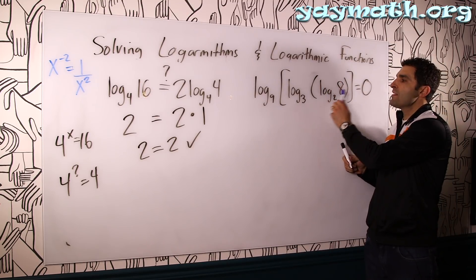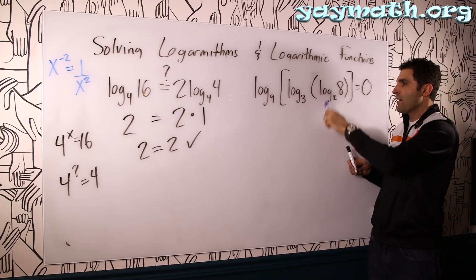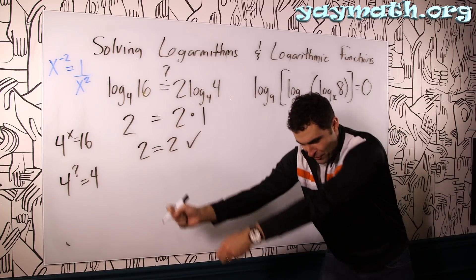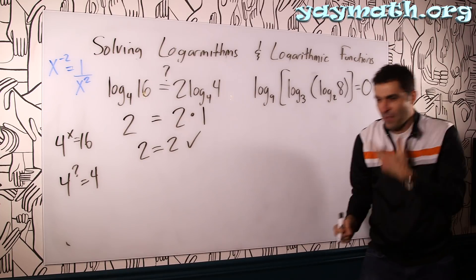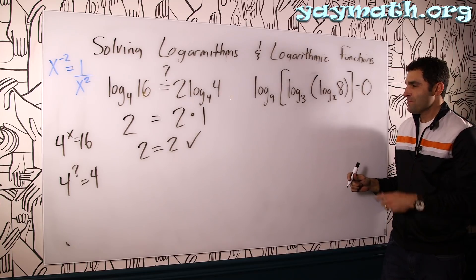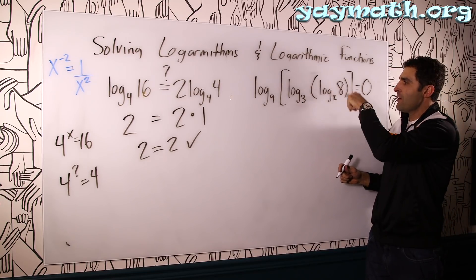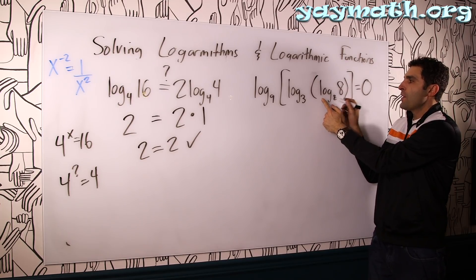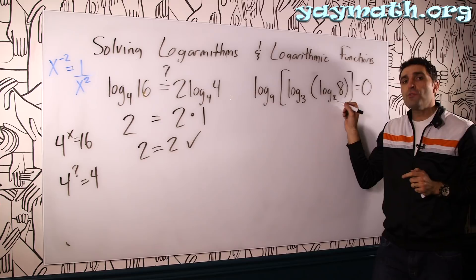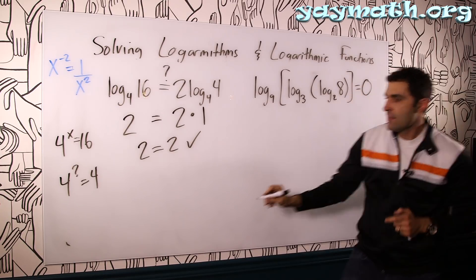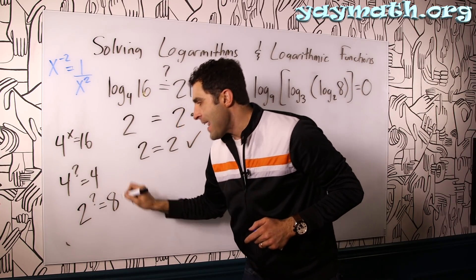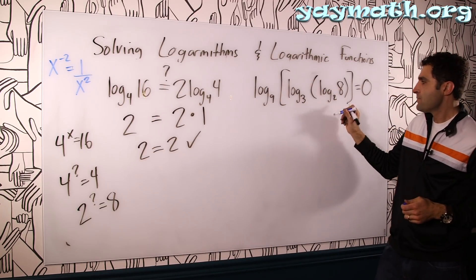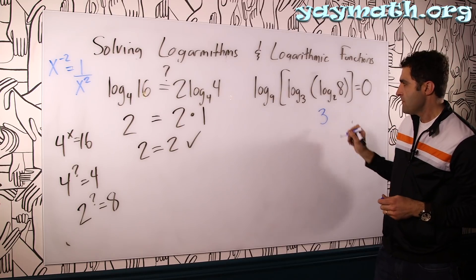Next. So this looks a little intimidating. Don't let it. Log, log, log. Right? Sounds like a lumberjack. Log, log. I feel my beard growing in right now. So rather than do it log, log, log like that, let's just go inside out. Log base 2 of 8. What is log base 2 of 8? That's the first one we did today. 2 to the what is 8. What is that exponent we seek? It's 2 to the third. Doing it. This is 3.